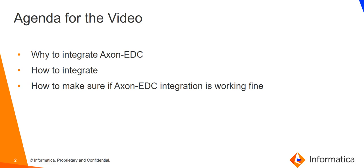Axon in collaboration with EDC can help both business users as well as technical users in an organization. For any technical requirements, technical users can use EDC, and if they or business users want to see any data governing details, then they can map data from EDC to data in Axon and govern their data through Axon. In this video, which is the first part of Axon-EDC integration, we will see how to configure Axon-EDC integration. In the next part, we will see how to map EDC assets to Axon for data governance.